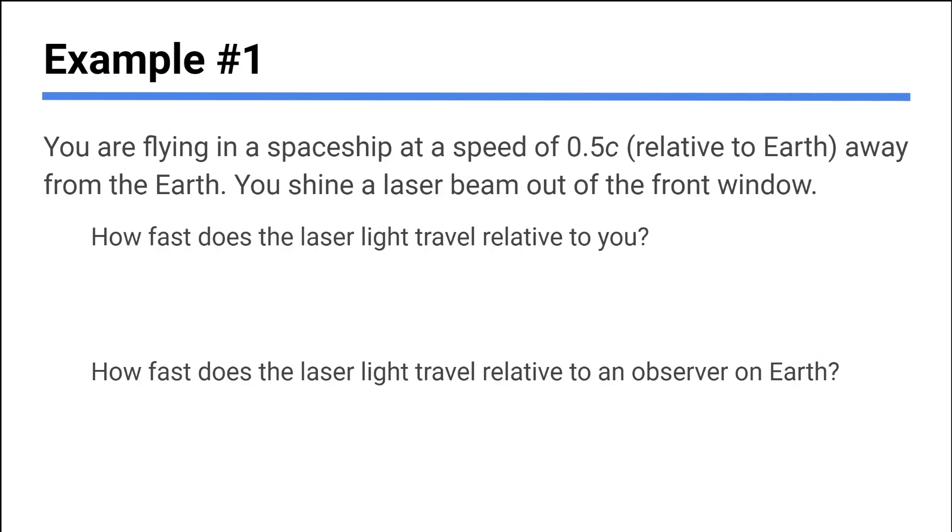Let's break this down with some super simple quote problems. So if you're flying a spaceship half the speed of light relative to the Earth away from the Earth, you shine a laser beam out of the front window. How fast does the light travel relative to you? Think about it. What do you think based on what we just said? What is the answer? The answer is C. It's the speed of light, which is C, which is 300 million meters per second. That's the speed of light. So relative to you, shine a light out the window. You see it going forwards 3 times 10 to the 8 meters per second.